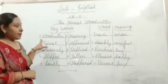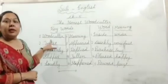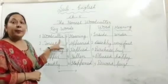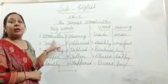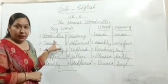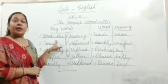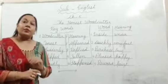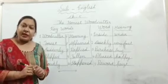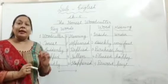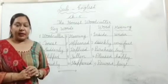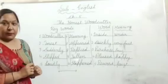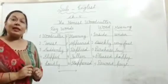First word is W-O-O-D-C-U-T-T-E-R — Woodcutter. Woodcutter means a person who cuts wood. He is a person who cuts wood. In Hindi, a woodcutter is called a lakkadhara.